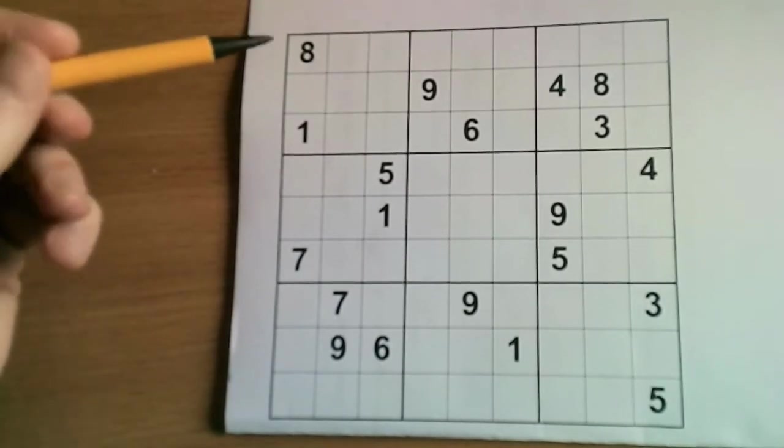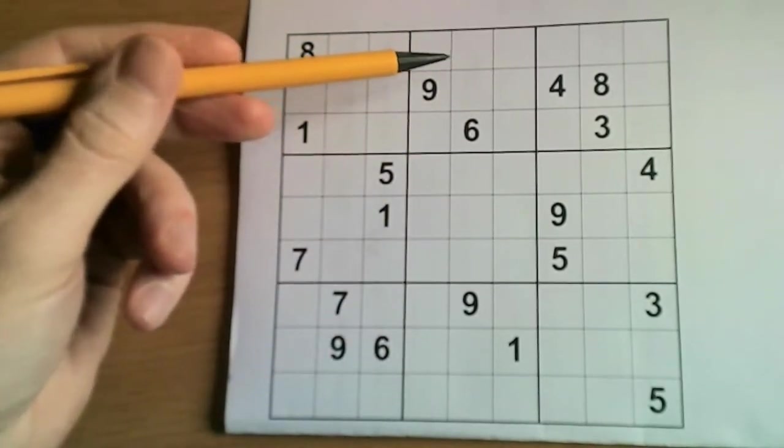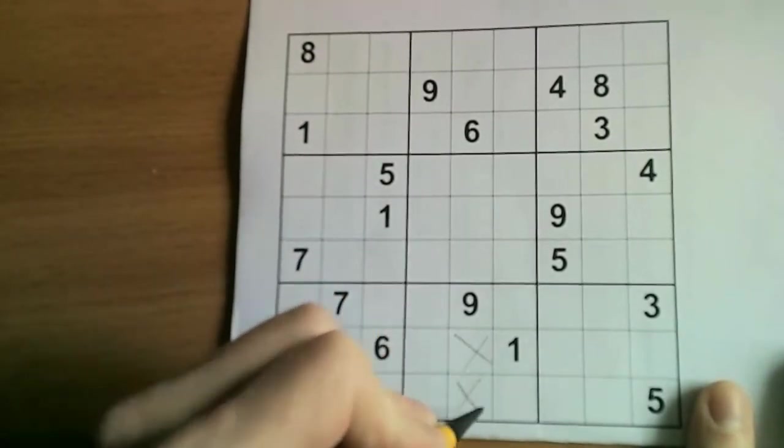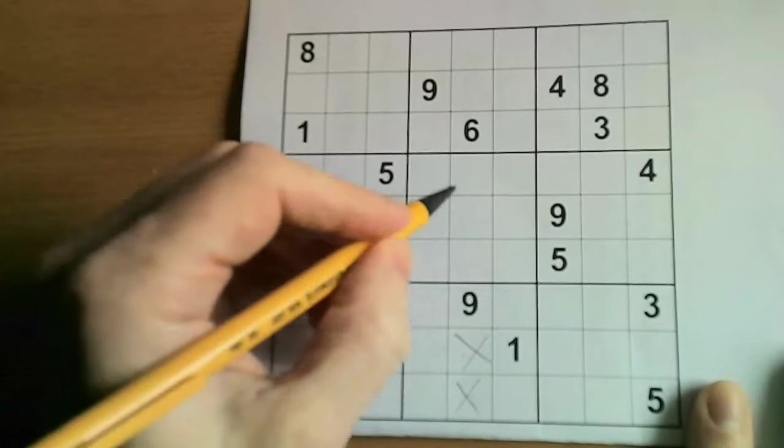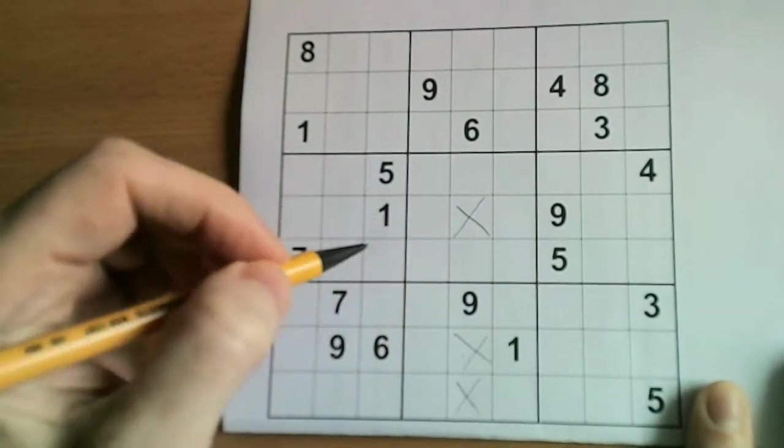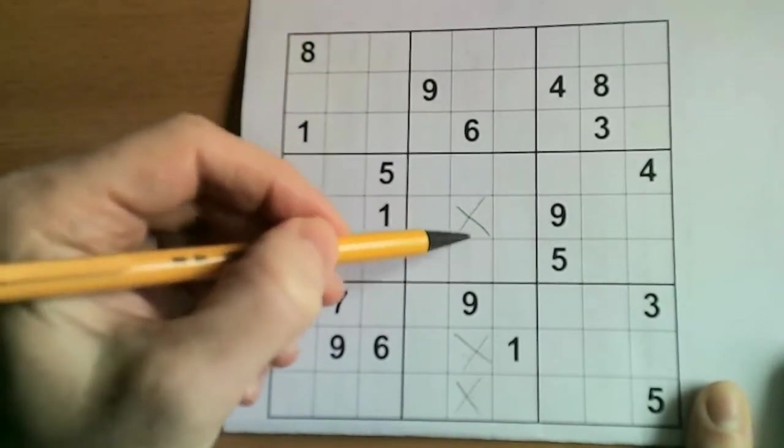So let's look at column five and let's ask ourselves where the one can go. Well clearly it can't go there or there due to the one in the box, and it can't go here due to the one in the row. So in normal Sudoku, that now narrows it down to one of these four squares.